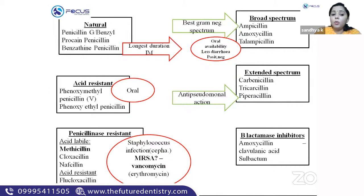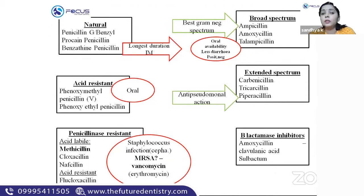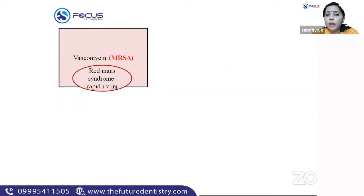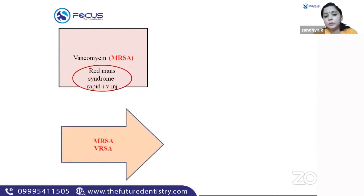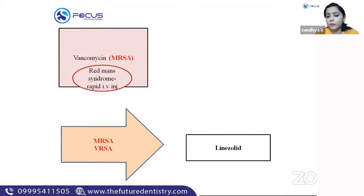If staphylococcus is resistant to methicillin (MRSA), the drug of choice is vancomycin. Vancomycin has a peculiarity: if given by rapid IV injection, it causes a sudden erythematous skin reaction called Redman's syndrome. If staphylococcus is resistant to both methicillin and vancomycin (MRSA and VRSA), the drug of choice is linezolid.